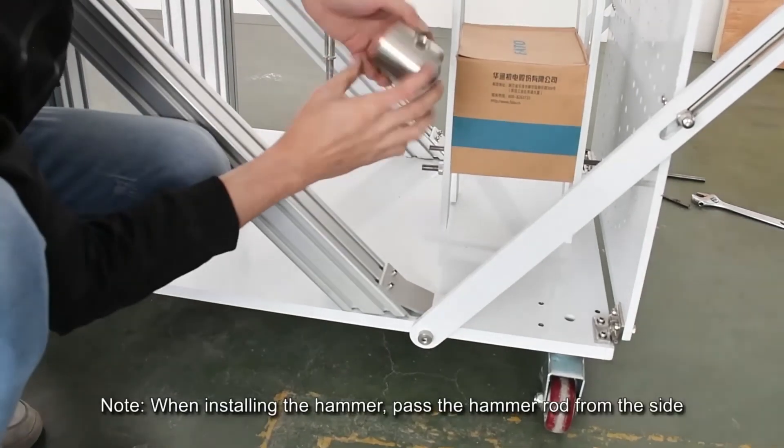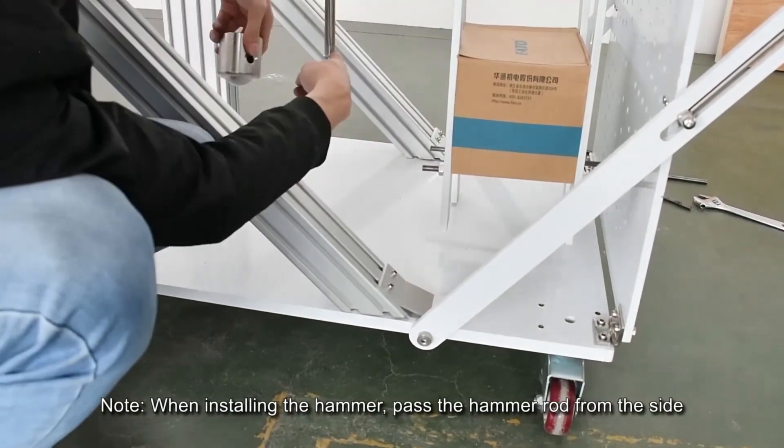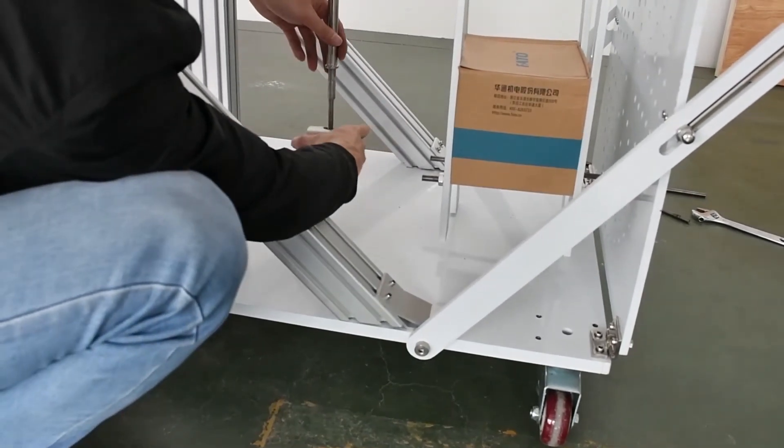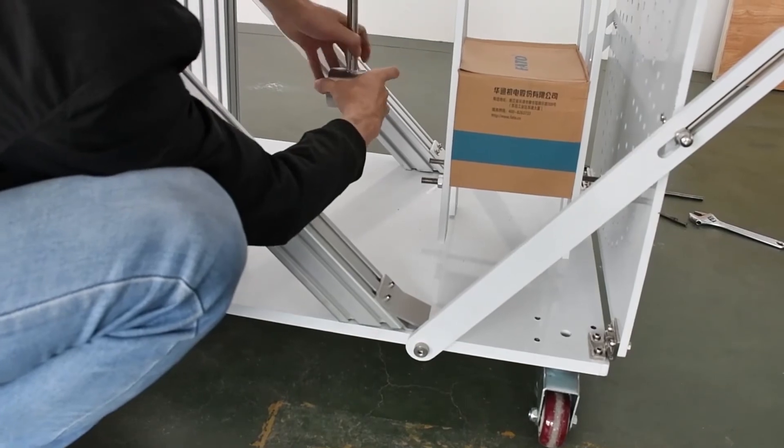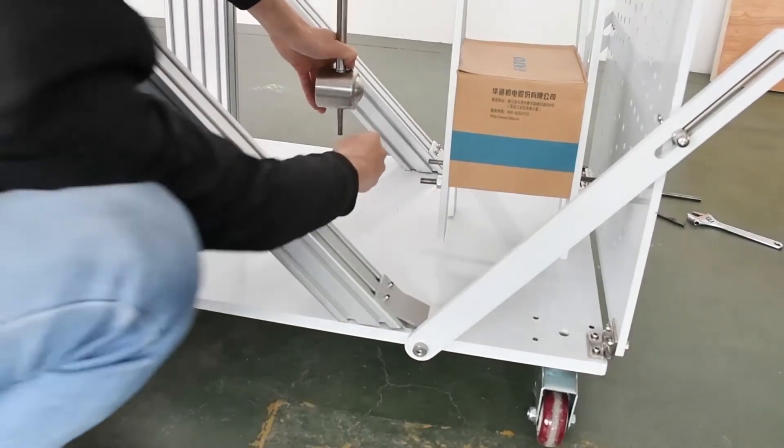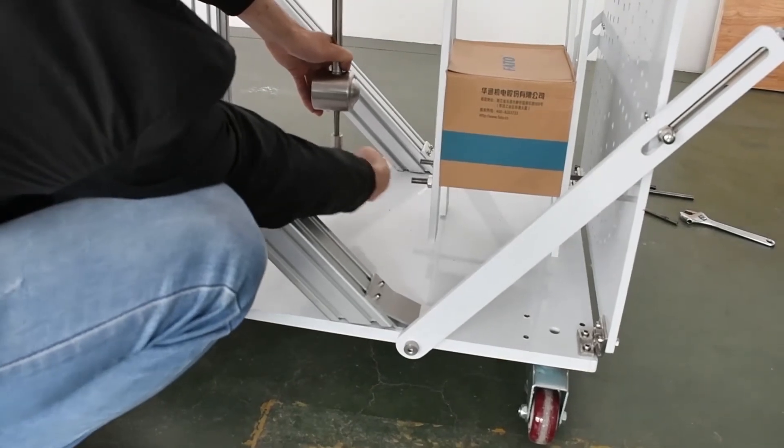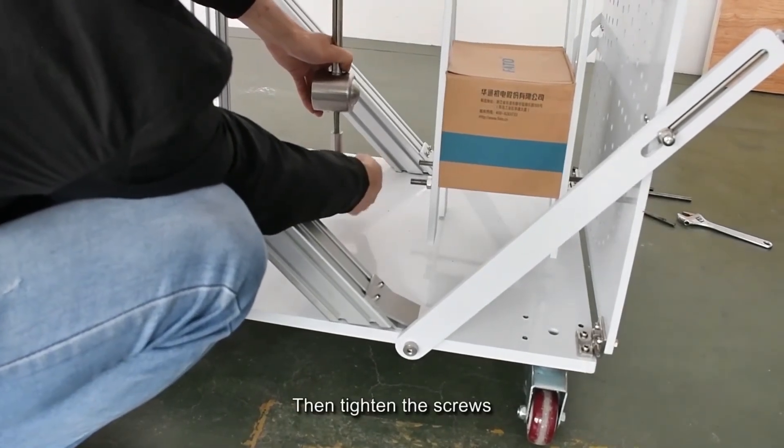Note when installing the hammer: pass the hammer rod from the side with the larger opening to the side with the smaller opening. Then, tighten the screws.